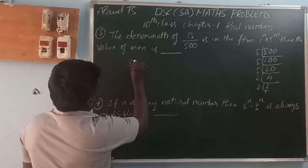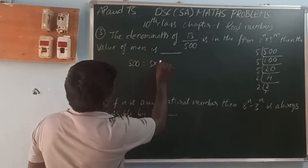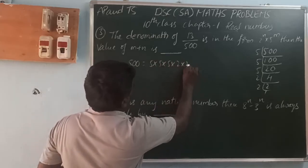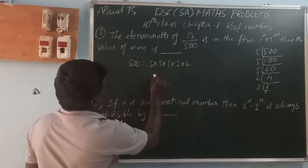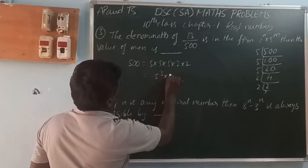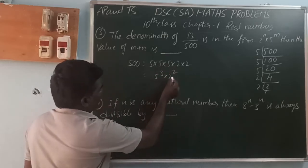500 equals 5 times 5 times 5 times 2 times 2, which is 5 cubed times 2 squared.